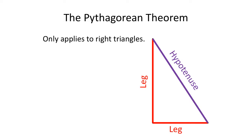Now, this only applies to right triangles. A right triangle is a triangle with a 90-degree angle, which in mathematics is represented with a little box in the corner. It makes a T or an L shape. There are parts to a right triangle we need to be familiar with: the two legs. The two legs are the sides that make up the 90-degree angle. The third side is the hypotenuse — we need to remember this word because we use it quite often. The hypotenuse is always the longest side and it is opposite from the 90-degree angle.